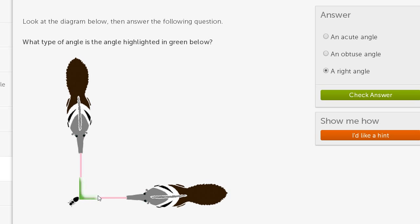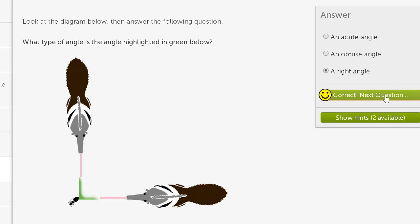If this was an acute angle, then the angle between them would be smaller. So maybe this top one would be coming in from this direction right over here. If it was obtuse, this angle would be larger. So let's check our answer and try to do a few more of these.